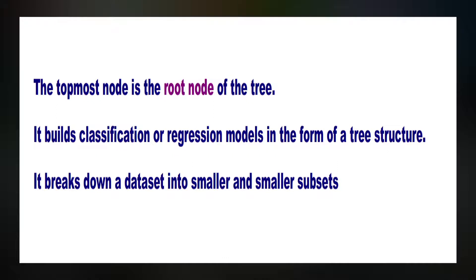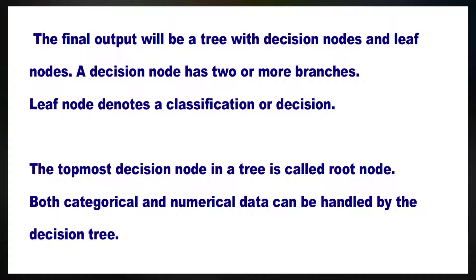It builds classification or regression models in the form of a tree structure. It breaks down a dataset into smaller and smaller subsets while a decision tree is developed correspondingly. The final output will be a tree with decision nodes and leaf nodes. A decision node has two or more branches. A leaf node denotes a classification or decision. The topmost decision node in a tree is called the root node.